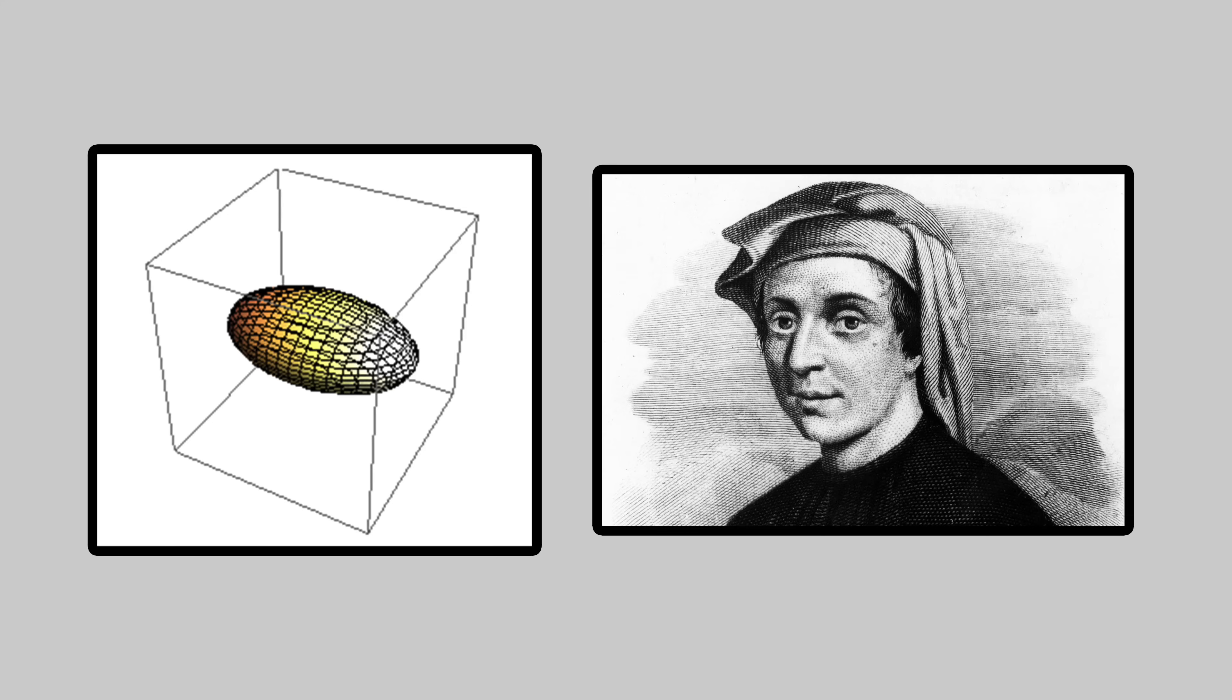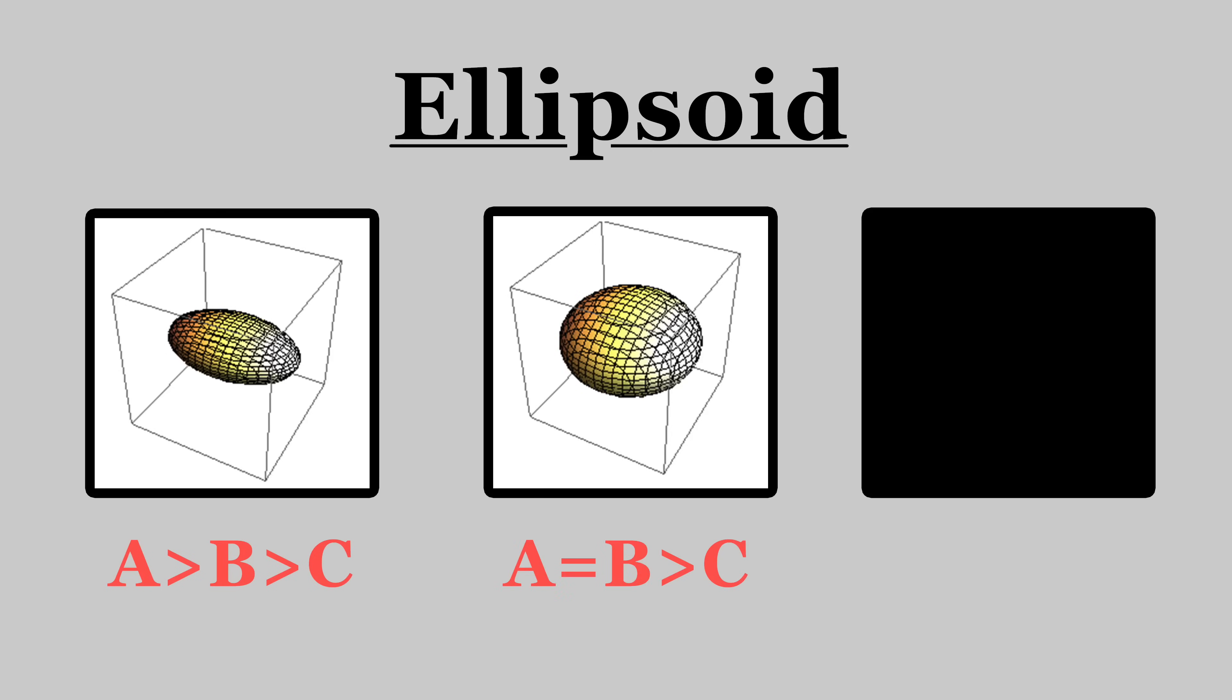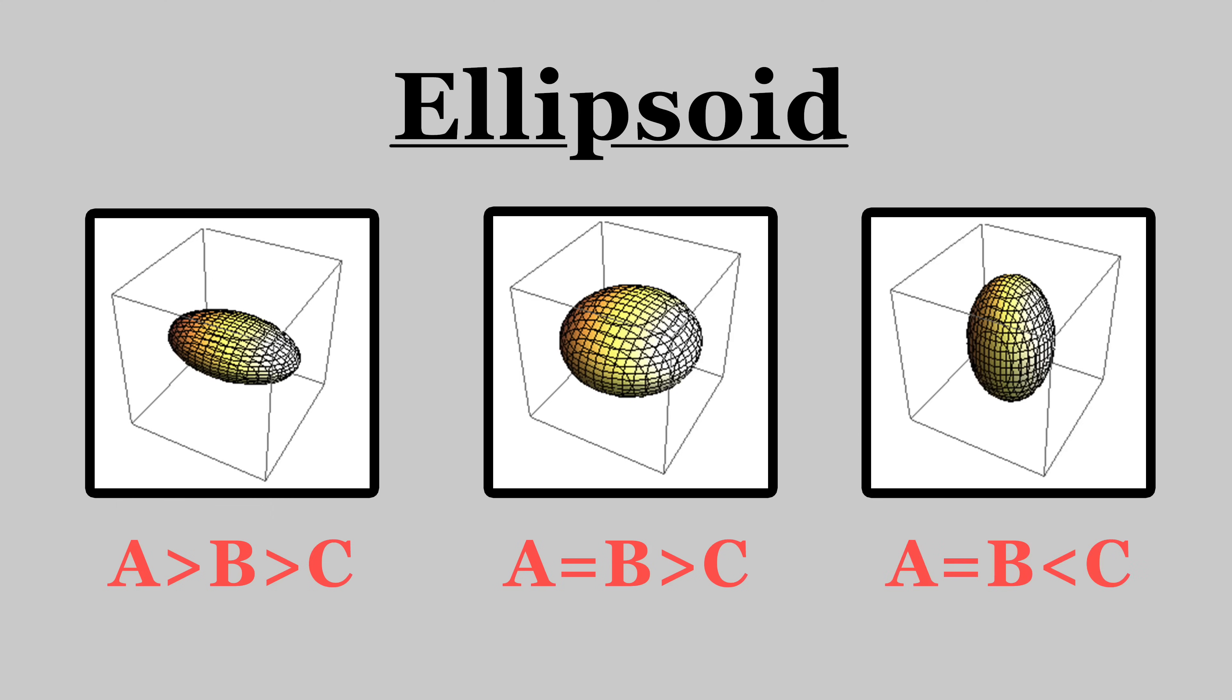FYI, ellipsoids come in three distinct flavors. Triaxial ellipsoids, where A is greater than B which in turn is greater than C. Oblate spheroids, where A and B are equal and greater than C. And prolate spheroids, where A and B are equal but less than C. Choose at will.